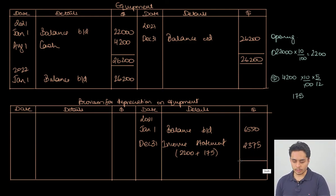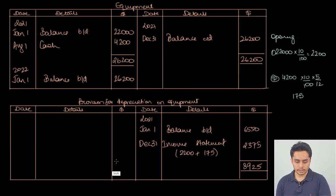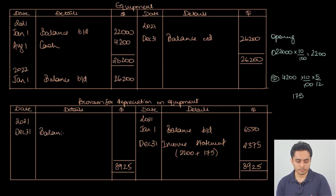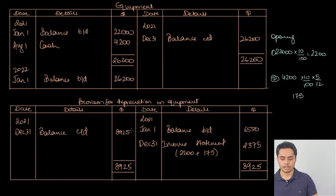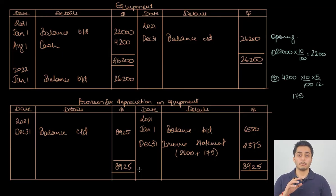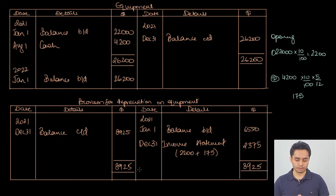Balancing the provision for depreciation on equipment account: 6,550 + 2,375 = 8,925. December 31, balance carried down 8,925. Do not forget to bring down the balance, especially if specifically mentioned in the question.